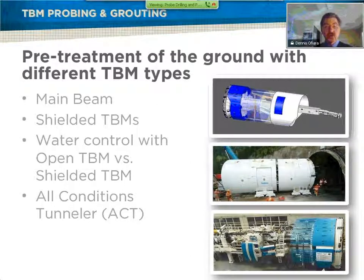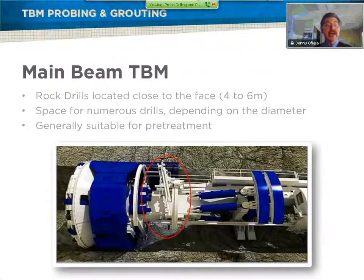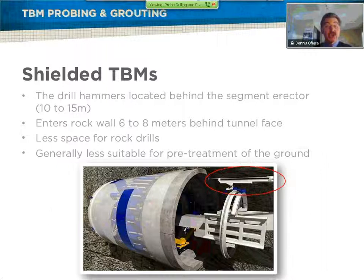Describing drills on different types of machines: on the main beam machine, the drills can enter the rock fairly close to the face. On a double shield machine, the drills generally enter through the gripper area, farther back from the face. The main beam machine, depending on size, can accommodate different positioner types and numbers of drills. Usually we can get the drill collaring into the rock close to the face, though on very small machines we may have to place the drill farther rearward.